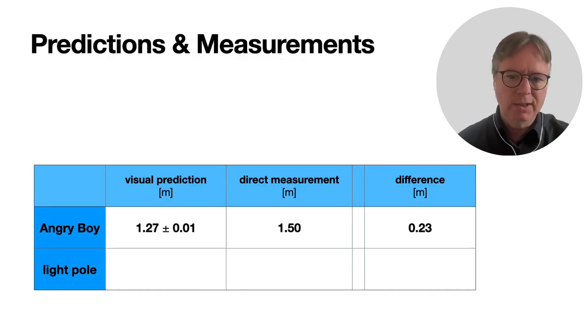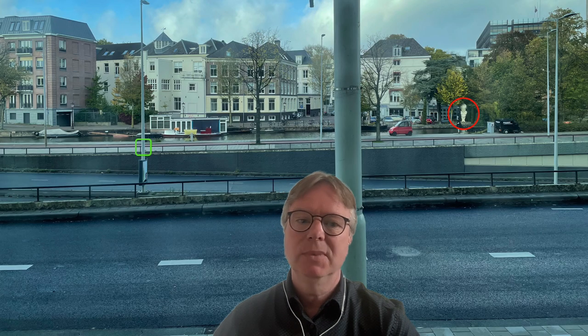Let's look at the results. The direct measure, well it's not direct, it's from the website, one and a half meters. The prediction from the two views is 1.27 meters ± 1 centimeter. That's rather precise, and you have to imagine that the distance is about 100 meters. It's hard to tell, but there's a road and then there's a canal and it's across the canal in a garden.